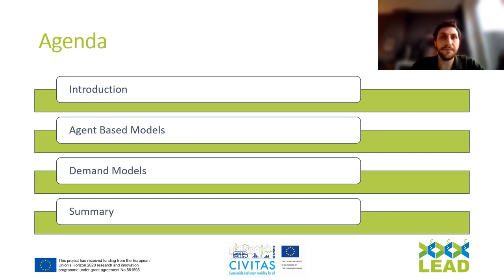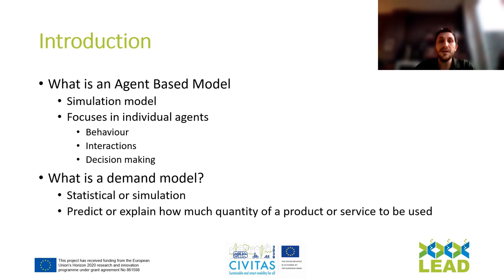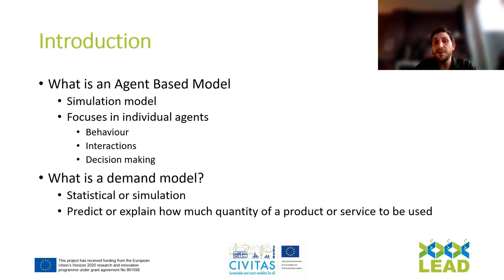First, what is an agent-based model? An agent-based model is a simulation-based model where the model focuses on the behavior of the individual agent. We have a description of each agent — what role does each agent have, what are the interactions between agents, for example the interaction between a shipper and the transport service providers — and we can get insight into how each agent makes decisions. As a summary, we simulate the behavior, interactions, and decisions of each agent.